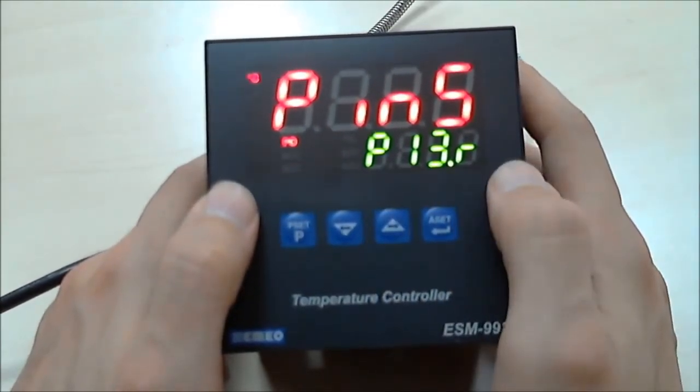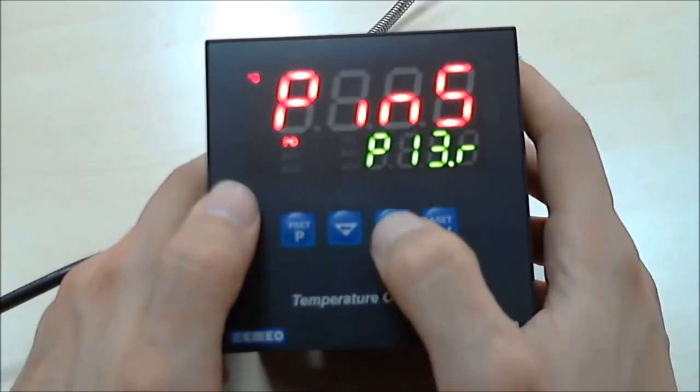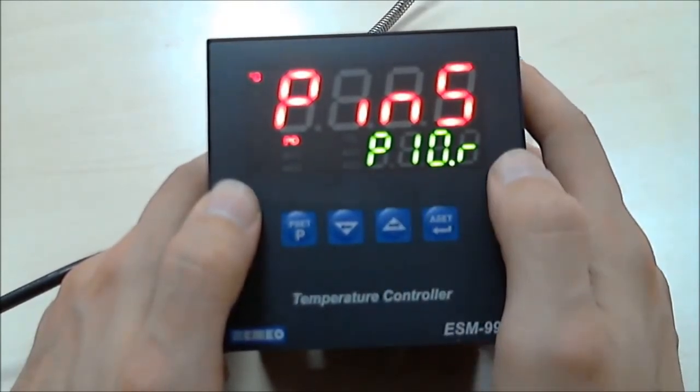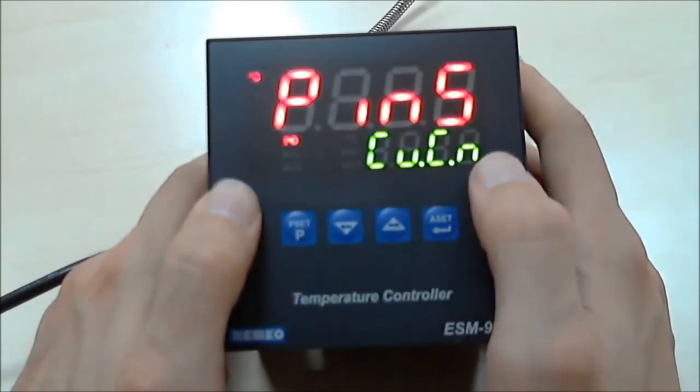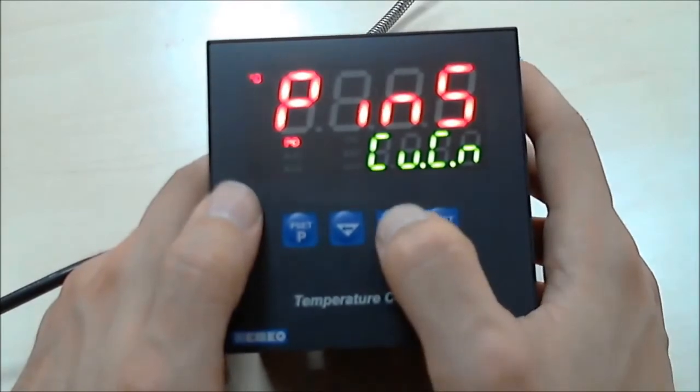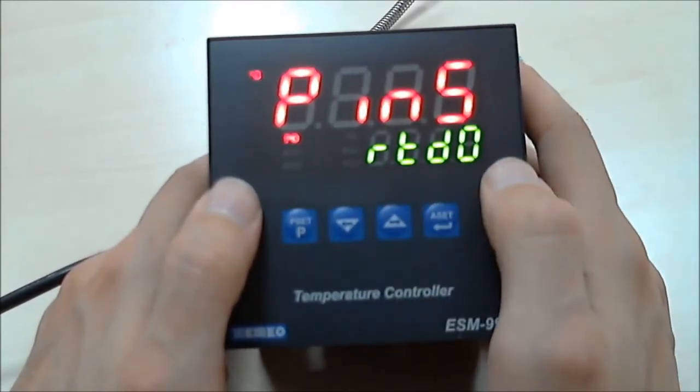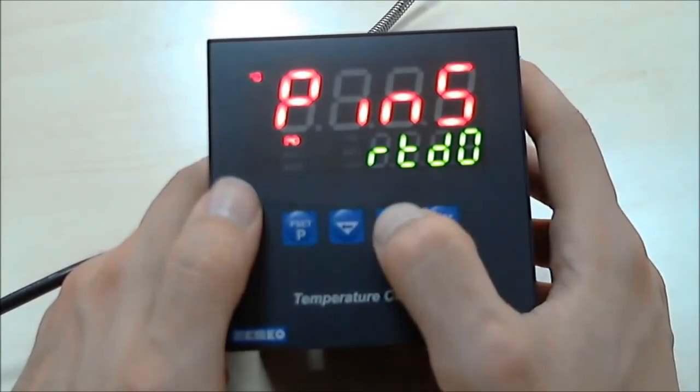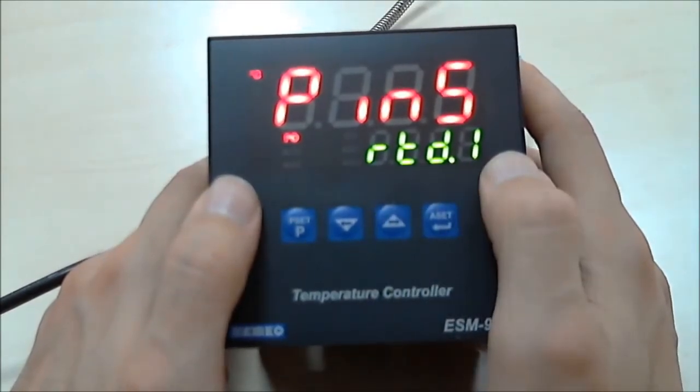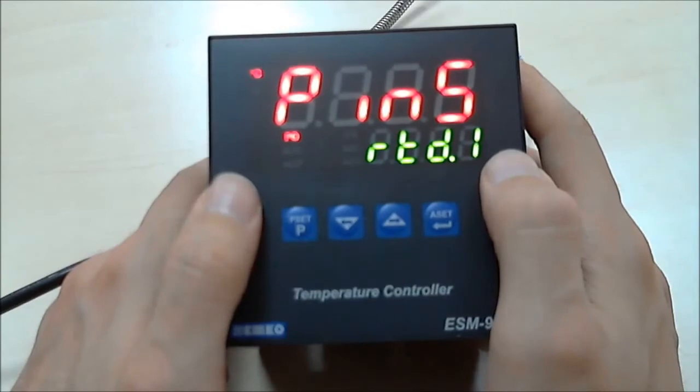This is for R-type thermocouple. This is for S-type thermocouple. This is for T-type thermocouple. This is for PT100 sensor. And this is for PT100 sensor with decimal point position.